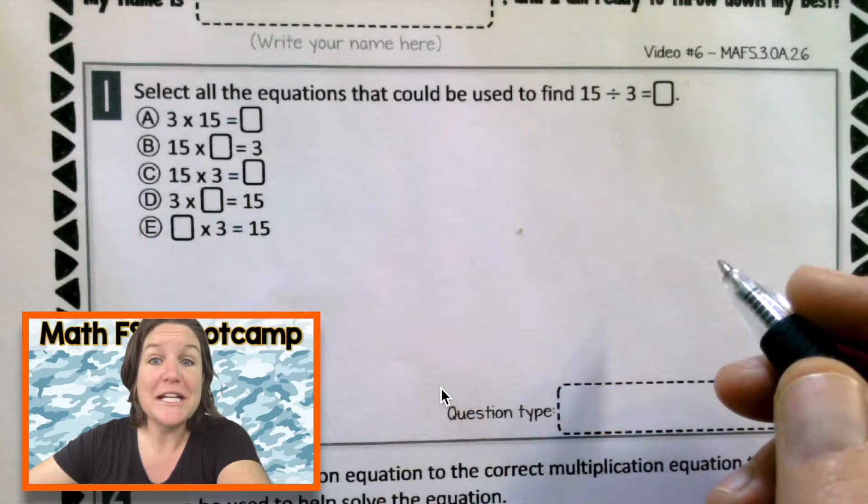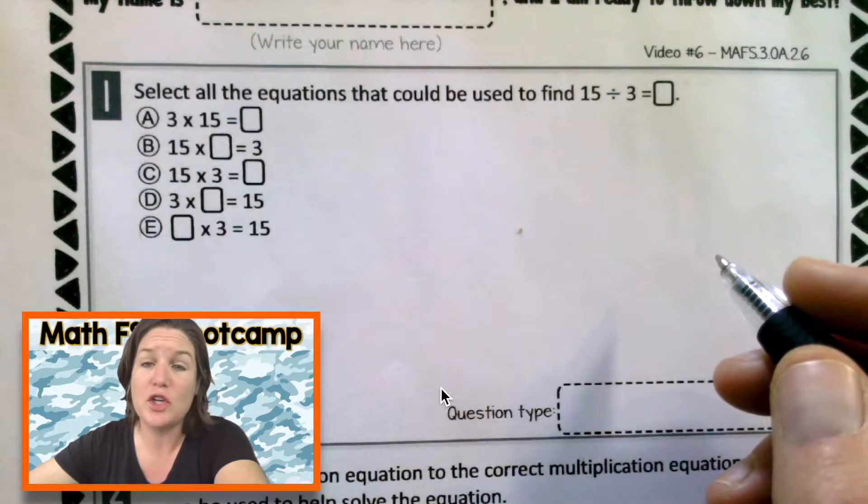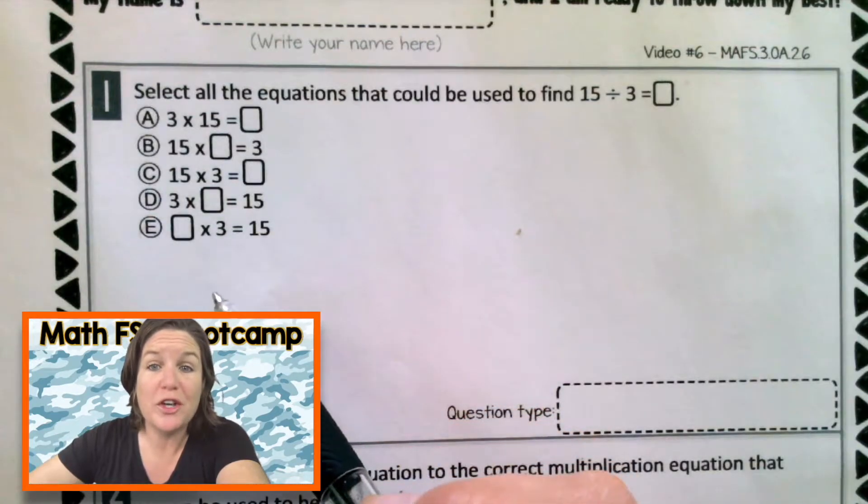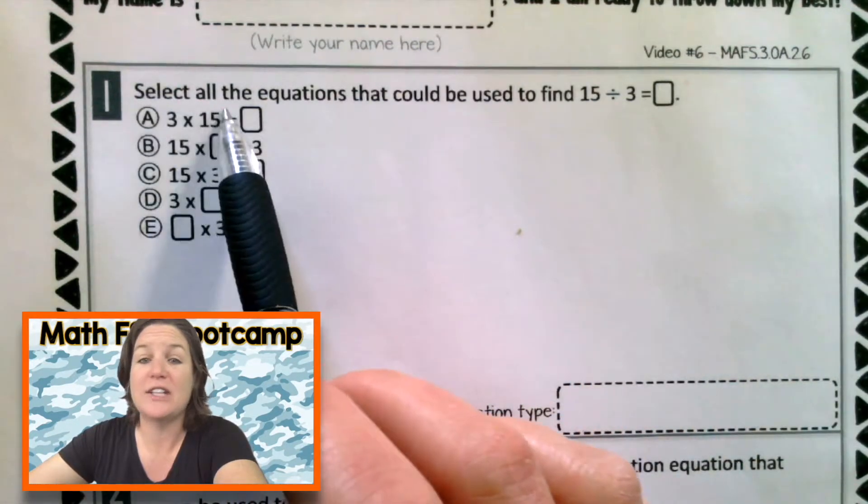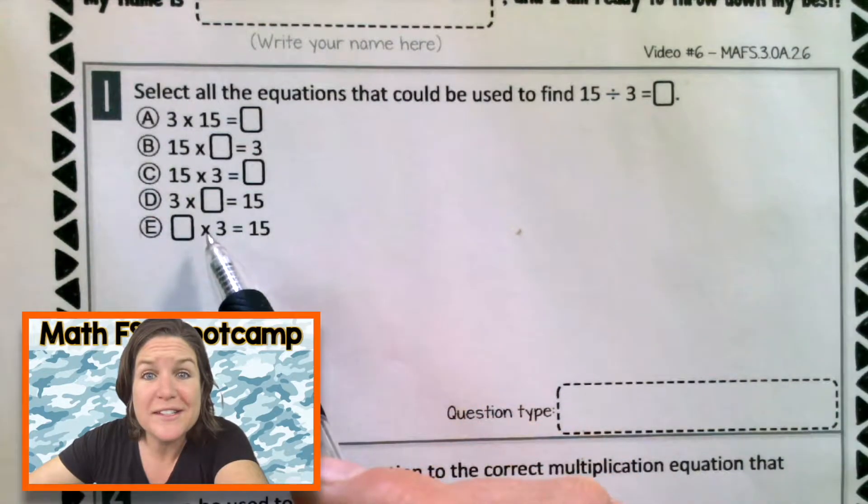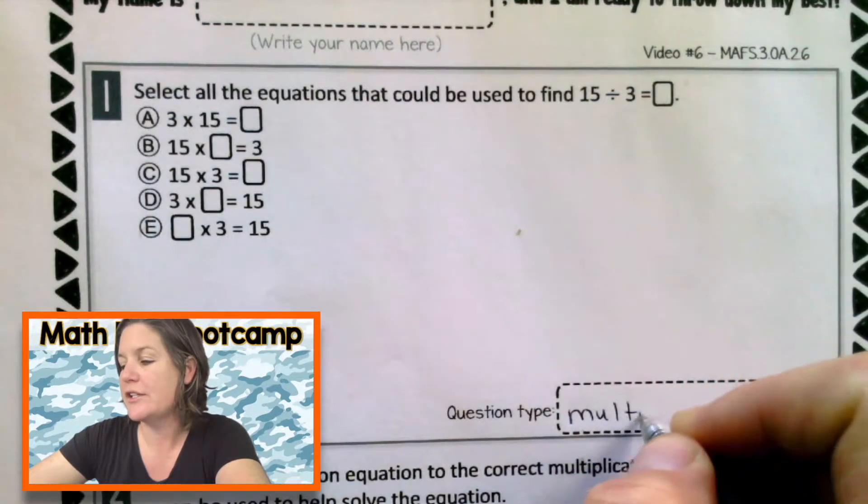Welcome back, everybody! I hope that you worked hard, threw down your very best. Now you're here to check your work, so let's go ahead. First, I'm taking a peek at the question to identify what question type this is. I'm saying a select all, and then A, B, C, D, and E. So what kind of question is this? It's a multi-select. If you forgot to write it in, do it now.